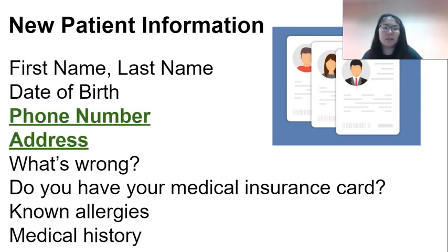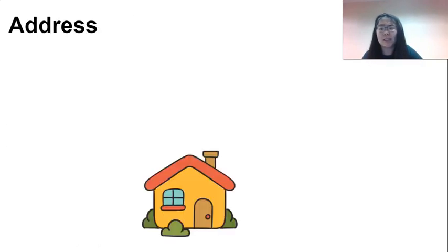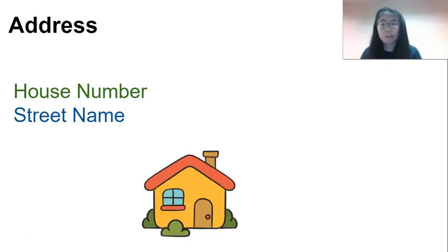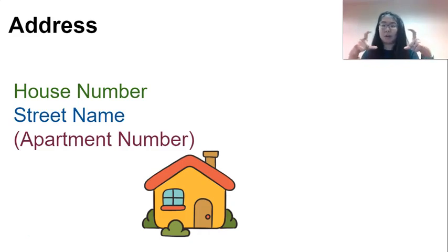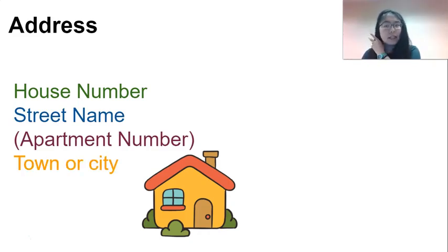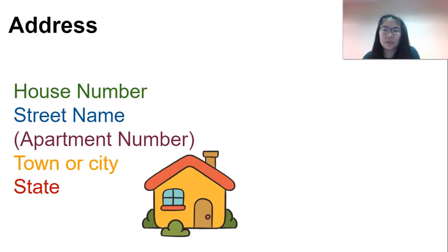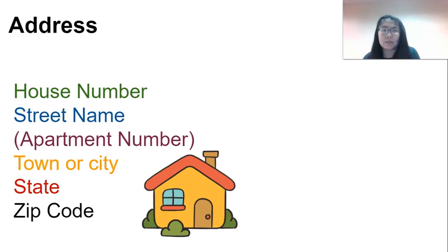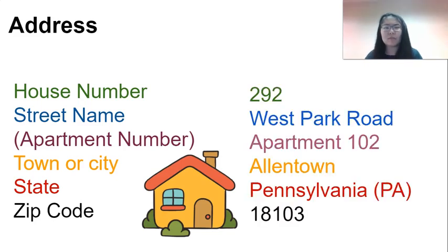Your address or street address is where you live, where they can send you mail. We say: first, the house number or apartment building number; the street name — the name of the street you live on; and if you live in an apartment, the apartment number. Next, the town or city where you live; the state, usually using the two-letter state abbreviation; and then your zip code — that's usually five numbers.